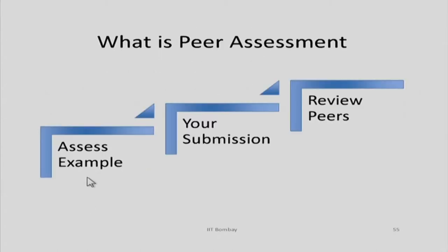The peer assessment in Moodle consists of three simple activities. First, you assess an example submission posted by the instructor — only then will you be allowed to submit your own response. This week's entry is about TPS activity creation; the due date is Tuesday the 17th. Once you submit it, the review process starts. When you look into your Moodle interface in the evening, you will find four submissions to review.